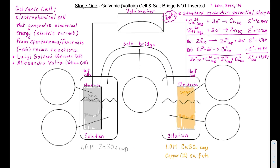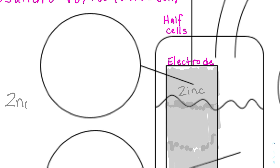Now let's zoom into the particulate level — the ions and atoms in our half cells. For the zinc metal electrode, I'll draw zinc atoms tightly packed together because they're in the solid state. I'm going to draw six of each species consistently so that in future videos we can see what changes as the cell runs.